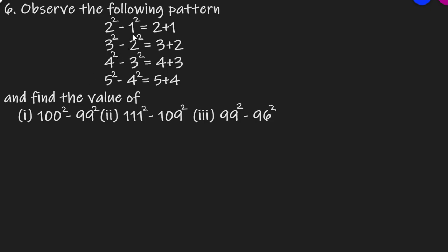यहां पर यह जो pattern है वो बस यही है कि difference of two consecutive natural numbers है। देखें, 2 का square में से minus किया गया है 1 का square से, मतलब यह दोनों 2 और 1 consecutive natural numbers हैं। तो consecutive natural numbers के squares का जो difference होता है वह उनके sum के बराबर होता है। यह जो formula है — a plus b into a minus b — यह use किया गया है, मतलब a square minus b square। जब a minus b करेंगे तो 1 आ जाता है, क्योंकि 2 minus 1 equals 1, और a plus b ही बचेगा, इसीलिए 2 plus 1 यहां पर लिख दिया है।